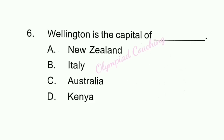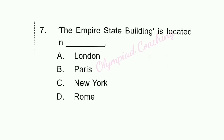Question number 6: Wellington is the capital of which country? Option A is correct. Wellington is the capital of New Zealand. Question number 7: The Empire State Building is located in which city? Option C is correct. The Empire State Building is located in New York.